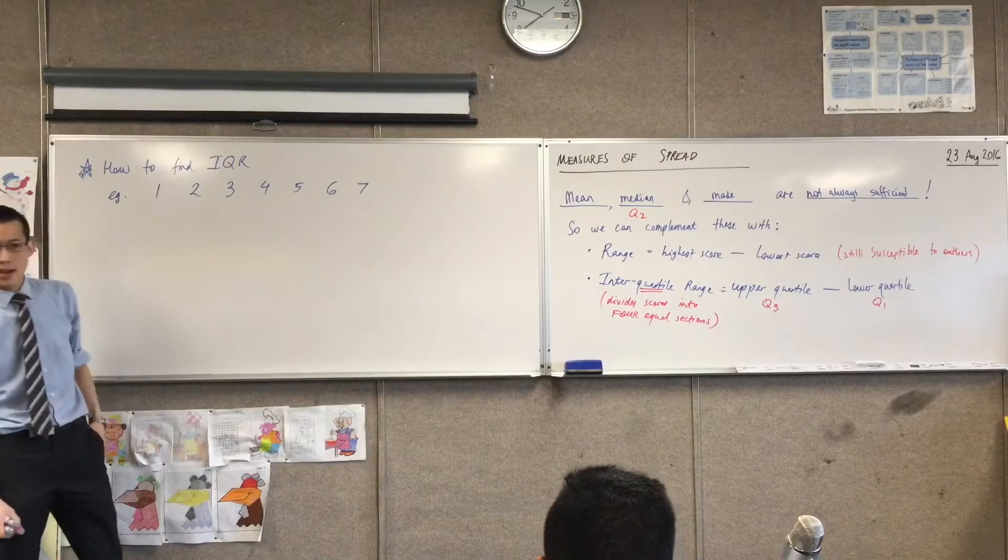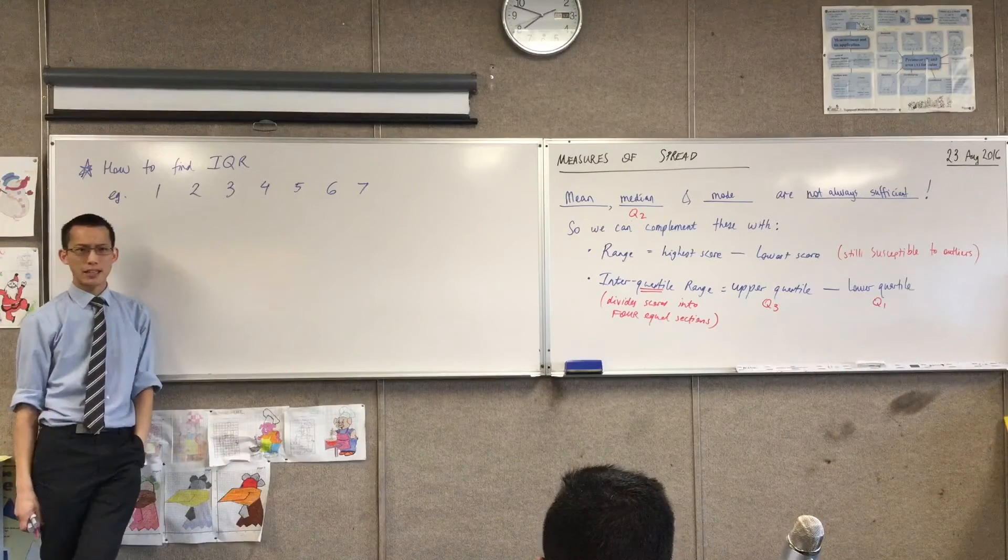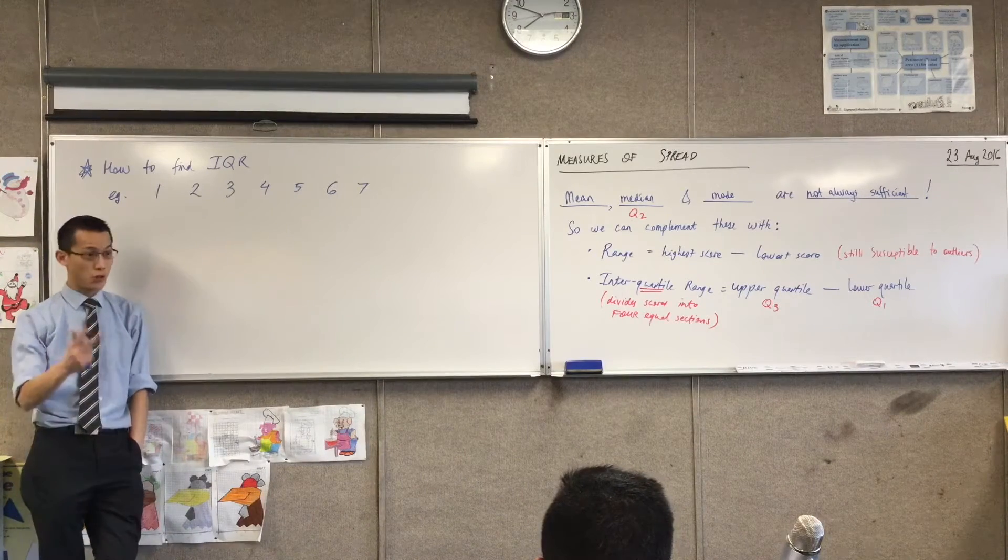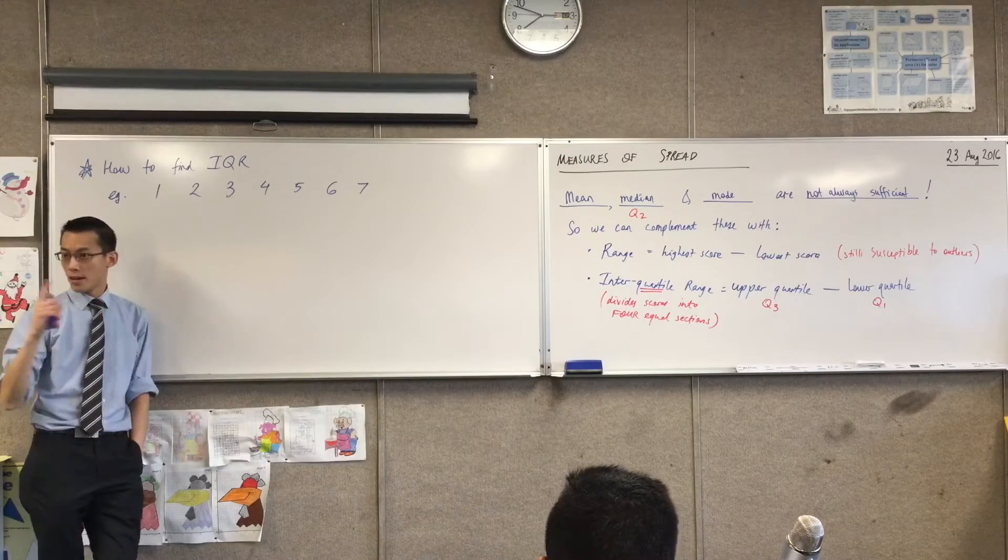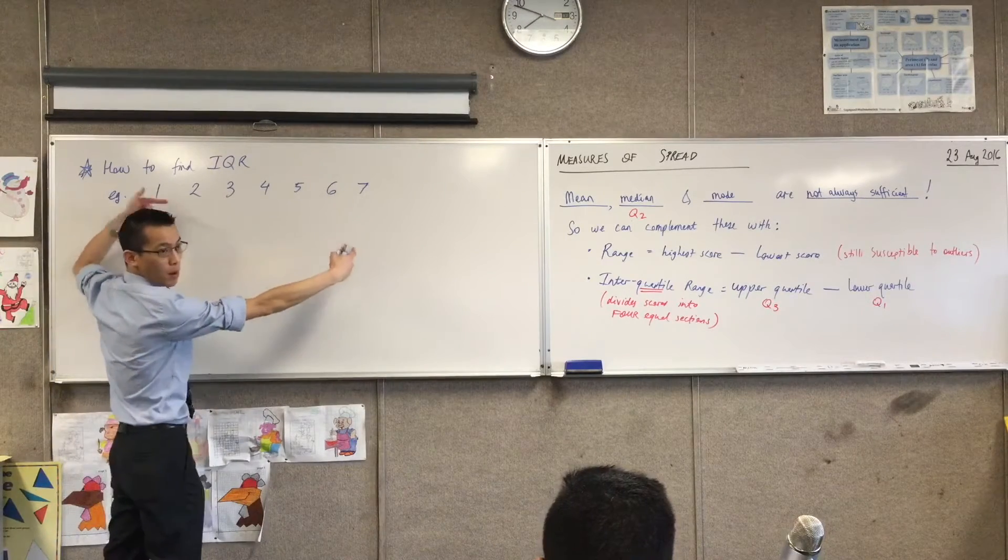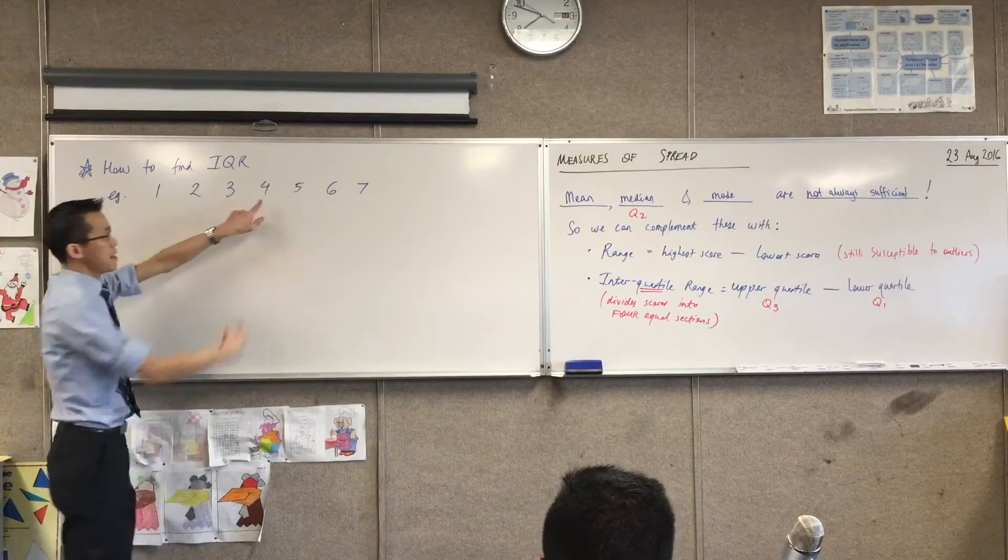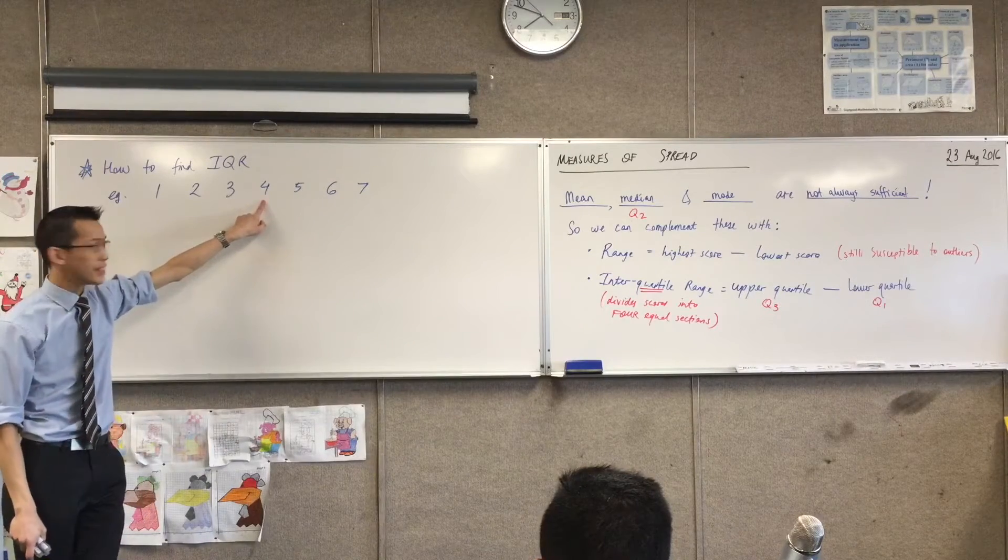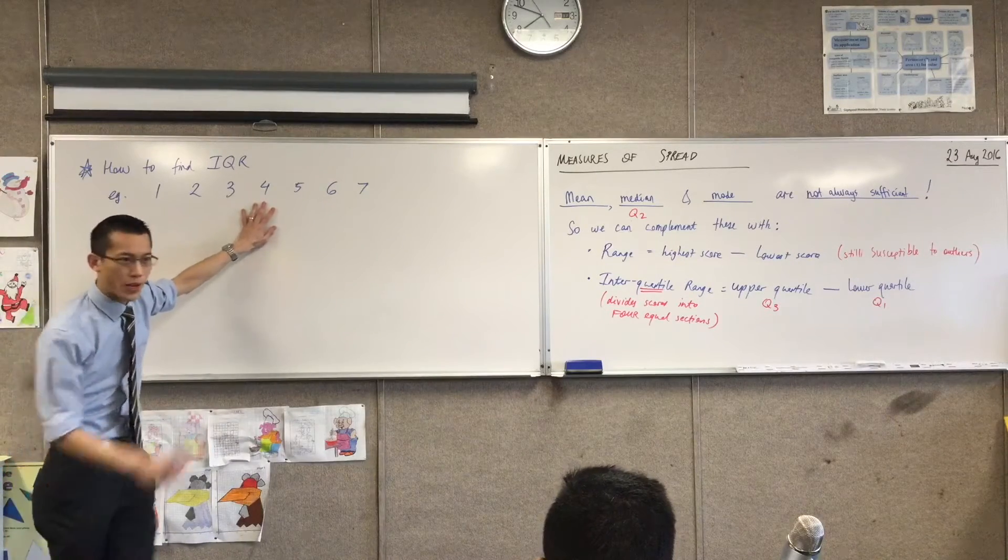Can someone remind me, how do I find the median in a normal set of scores? I've got two ways if you remember. Okay, number one, I can just sort of climb from the bottom and from the top and eventually I will be in the middle. Does that make sense? What was my other way of doing it, my quicker way?